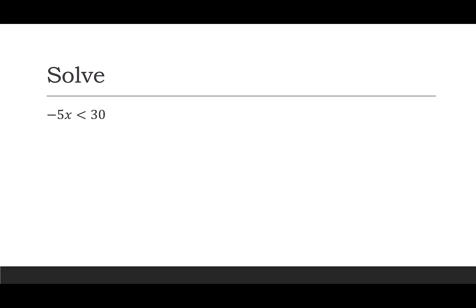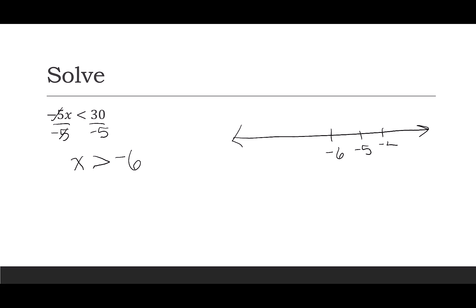Now we have negative 5x is less than 30. The opposite of multiplying by negative 5 is to divide by negative 5. We have to remember when we divide by negative 5 we are going to flip our inequality. The negative 5 cancels and I just have x. The less than becomes greater than, and 30 over negative 5 is negative 6. On the real number line I put negative 6 and a few more numbers. Negative numbers can be a little confusing, so having this graphing step can really help with interval notation. I use an open circle at negative 6 to show strictly greater than and shade to the right. The interval notation goes from negative 6 to infinity with a parenthesis on both ends.